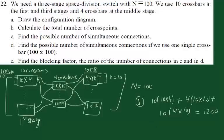Part C asks us to find the possible number of simultaneous connections. Each crossbar at the first stage has four outputs that could transmit at a time, and we have ten crossbars. So four times ten is forty — we have forty simultaneous connections.